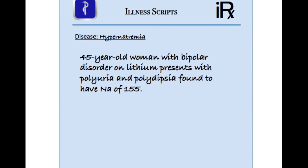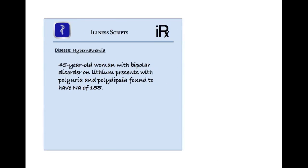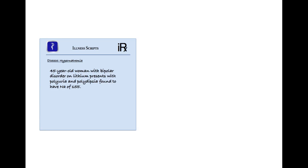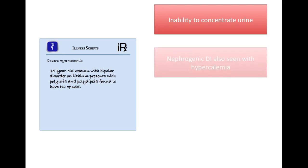Let's compare that to a different illness script. This one is of a 45-year-old woman with bipolar disorder who is on lithium, who presents with polyuria and polydipsia found to have a sodium of 155. In this particular case, we see that this is likely due to diabetes insipidus, and more specifically, this is a nephrogenic diabetes insipidus due to lithium. You can also see a very similar presentation in patients that are hypercalcemic.